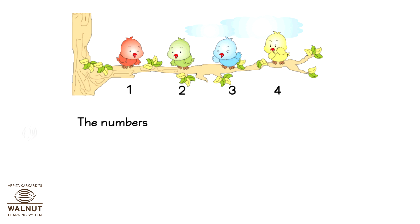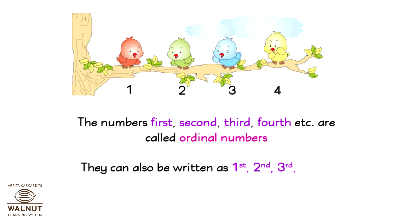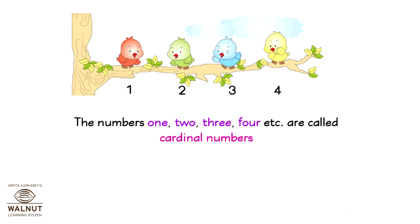The numbers 1st, 2nd, 3rd, 4th, etc. are called ordinal numbers. They can also be written as 1st, 2nd, 3rd, 4th, etc. The numbers 1, 2, 3, 4, etc. are called cardinal numbers.